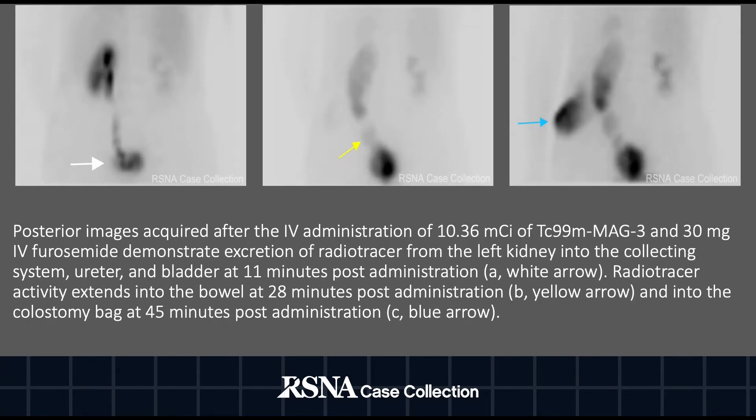Here are a few static images from that dynamic scan. On the image to the left there is excretion of radiotracer from the left kidney into the collecting system, ureter and bladder at 11 minutes post-administration as demonstrated by the white arrow. In the middle image radiotracer activity extends into the bowel at 28 minutes post-administration as demonstrated by the yellow arrow, and up into the colostomy bag at 45 minutes post-administration as demonstrated by the blue arrow on the right image.